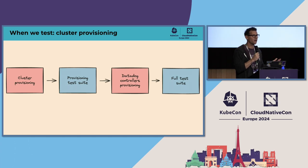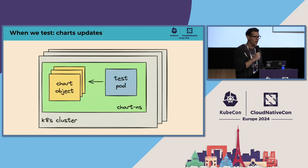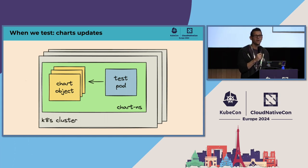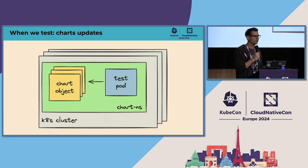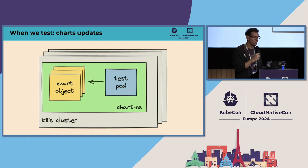When everything is passing, we onboard new users and tell them the cluster is ready to deploy. Another usage is when we update a single component. Imagine you have a controller with Helm charts — you're bumping controller versions, making a change to the chart, maybe updating your RBAC. When you install it, we also run a small subset of tests related to that particular controller to make sure you're not breaking anything.